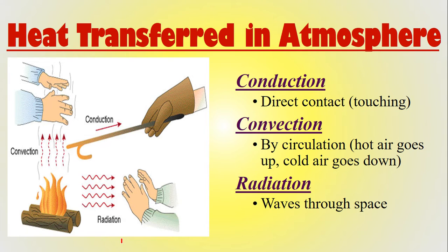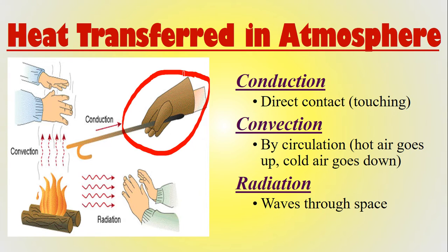Heat energy, which we measure with temperature, has to be transferred somehow, and there are three ways to do it. Conduction means direct contact or touching — that's conduction. Convection: we talked about convective currents back in plate tectonics because they made the plates move. Here in the atmosphere, convection means hot air goes up, cold air goes down, creating a rotation.